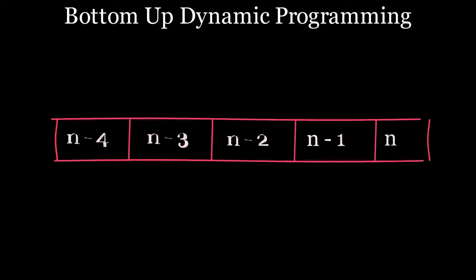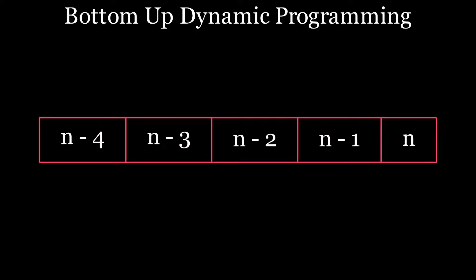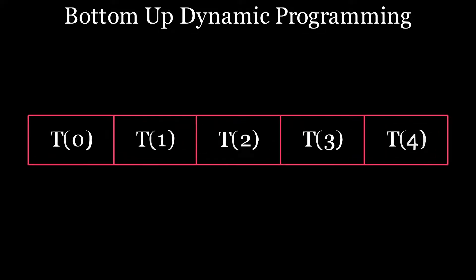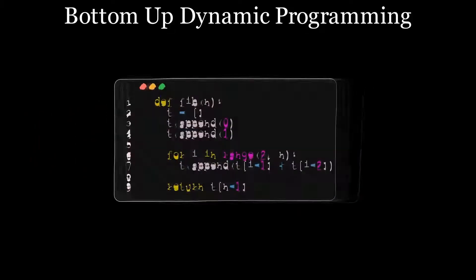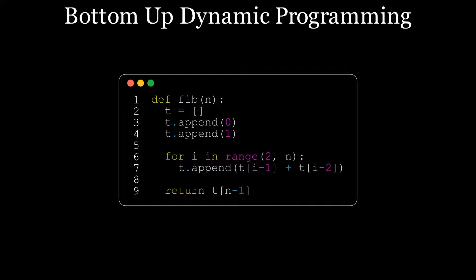This approach is called bottom-up dynamic programming, as it starts from the base cases and lower values of n and works towards the larger subproblems and the target. You might sometimes see this approach called tabulation, as the process is a bit like filling in a table. The code looks a bit like this. You create a table, which is often an array in code, and add your base cases. You can then loop over the input values in their dependency order and sequentially calculate the solution to the gradually increasing subproblems. The overall solution for the Fibonacci sequence is then the last value in the table.